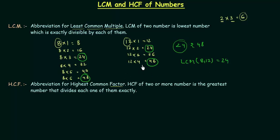But every time we don't have to follow this way to solve the problem. I will explain two methods: the first one is the prime factorization method and the second one is the division method. They are quite simple methods to find out LCM and HCF.